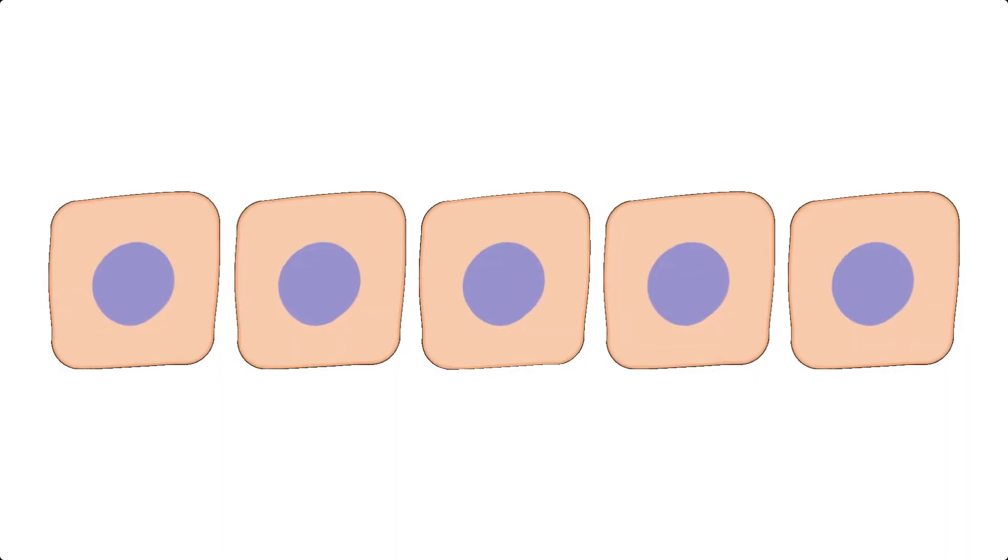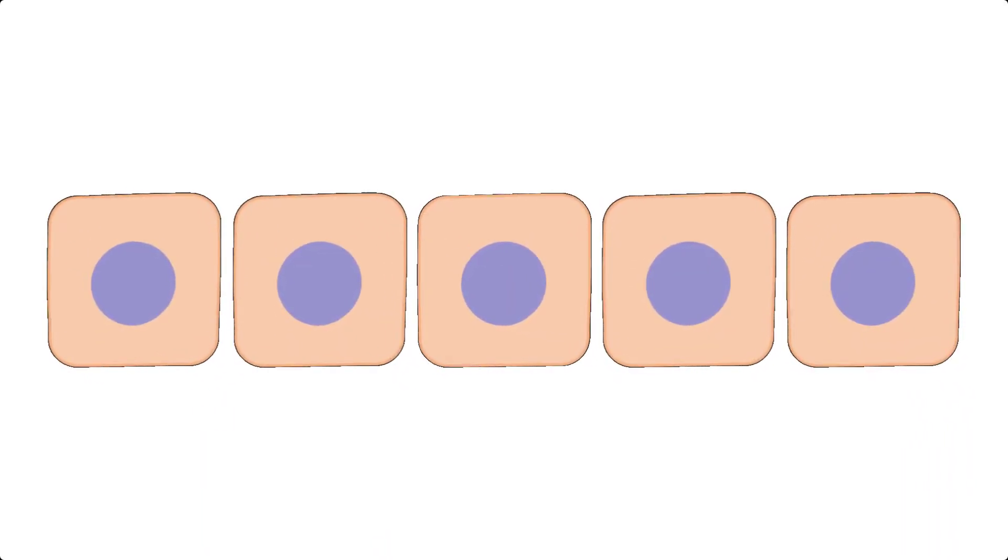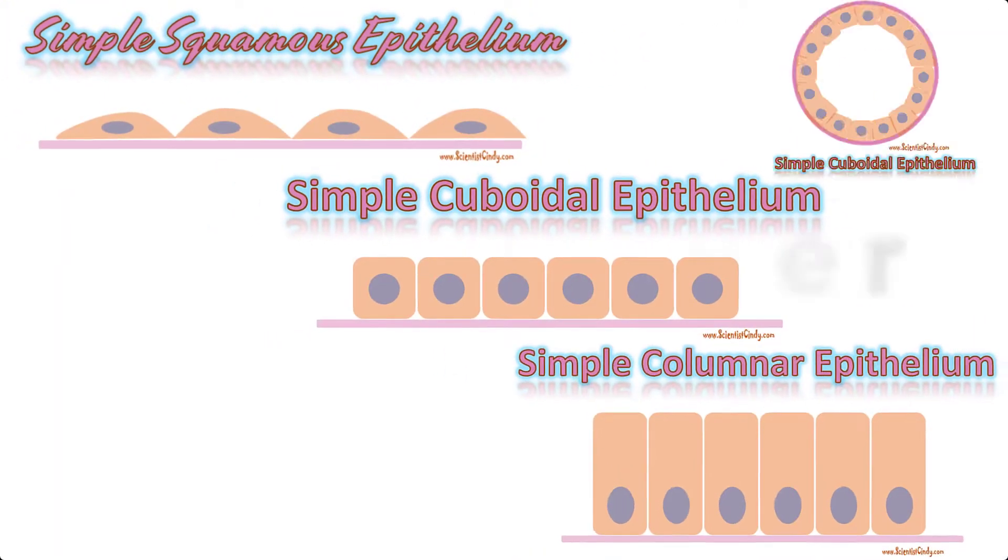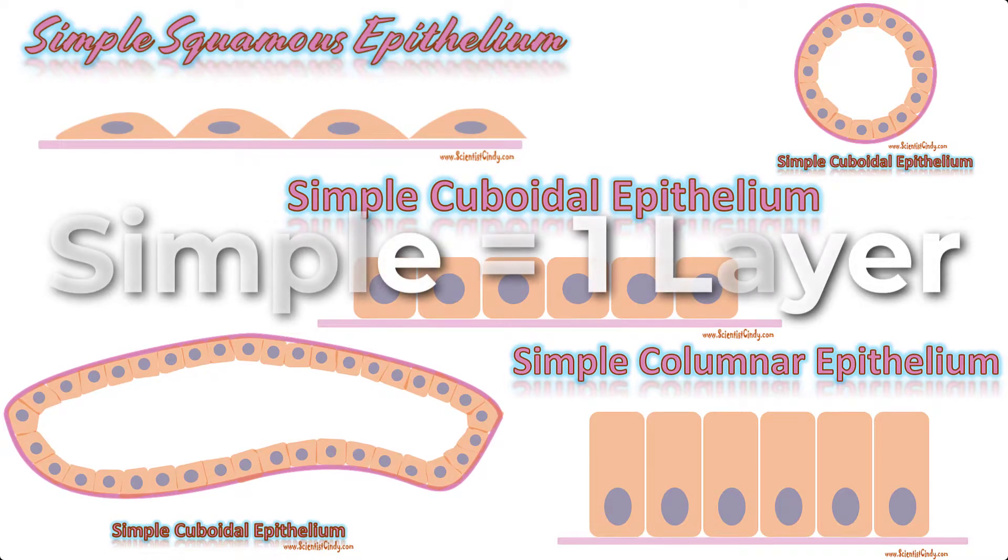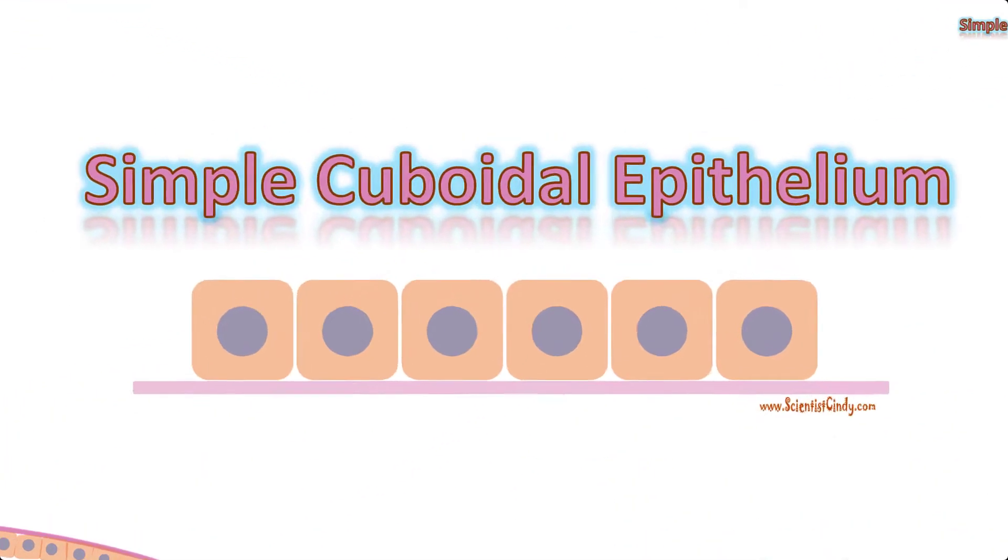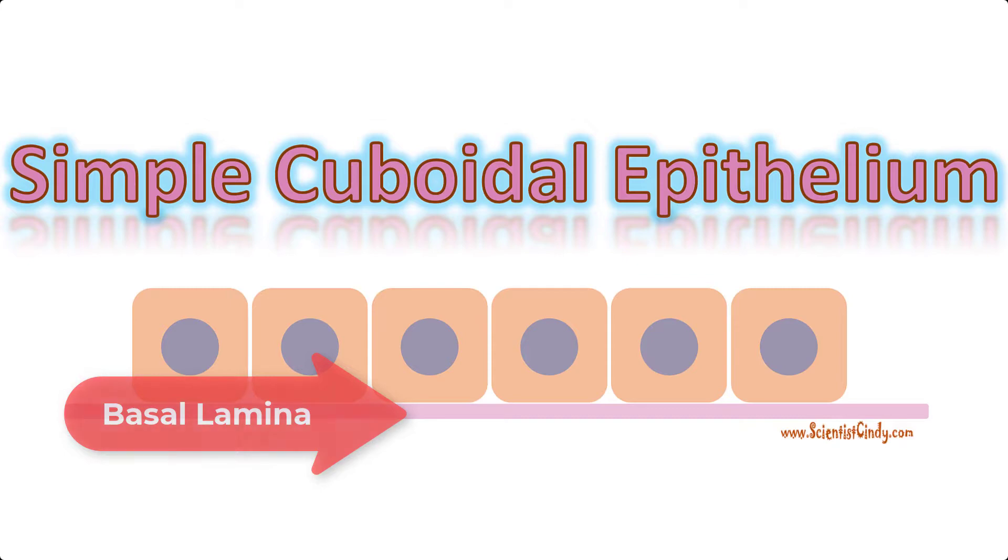The number of cell layers in each tissue can vary from one to many. Epithelium can be categorized as a simple epithelium when the number of cell layers in the tissue is only one, in other words, where every cell rests on the basal lamina.